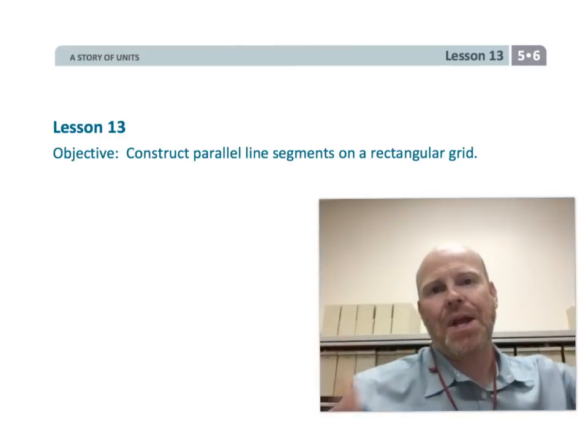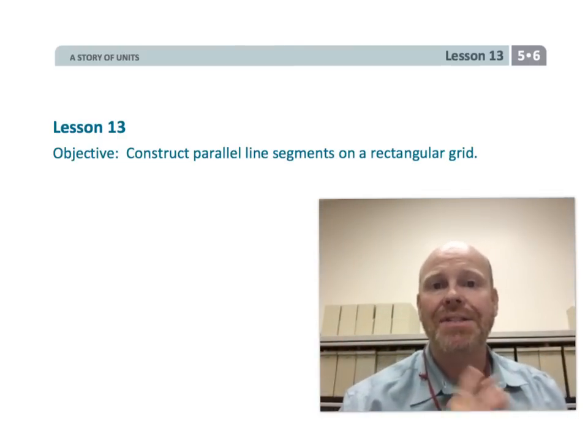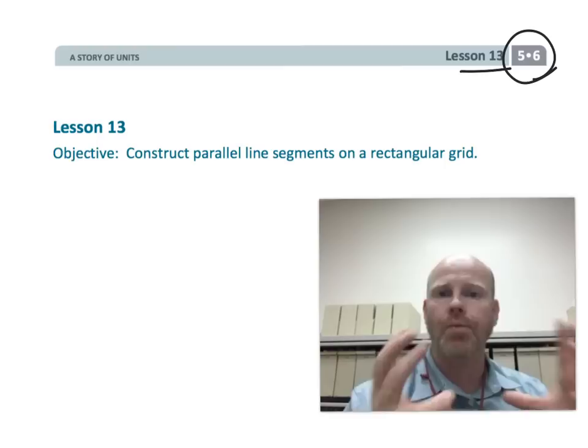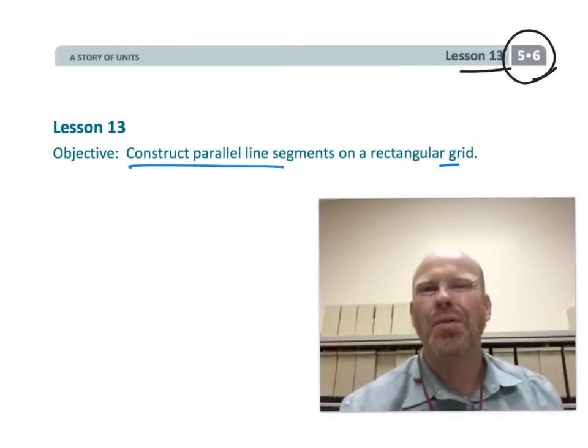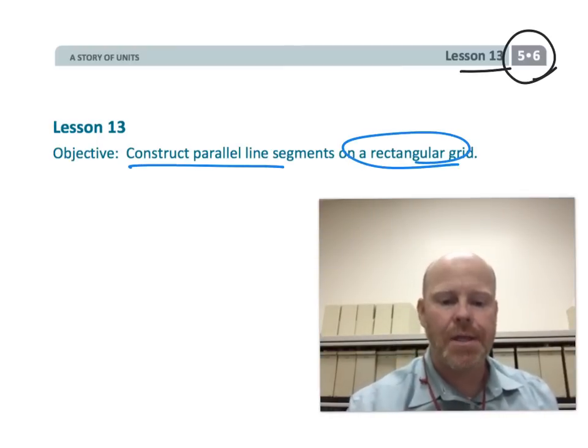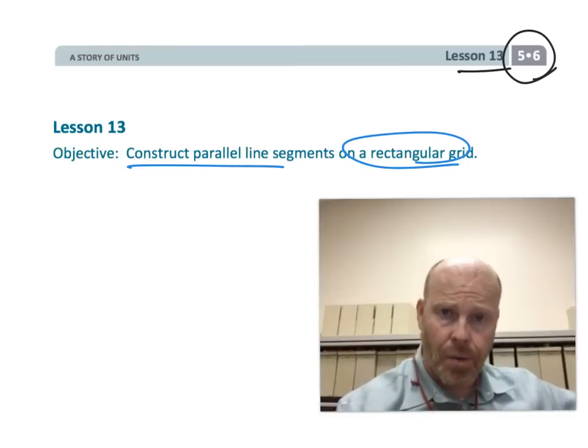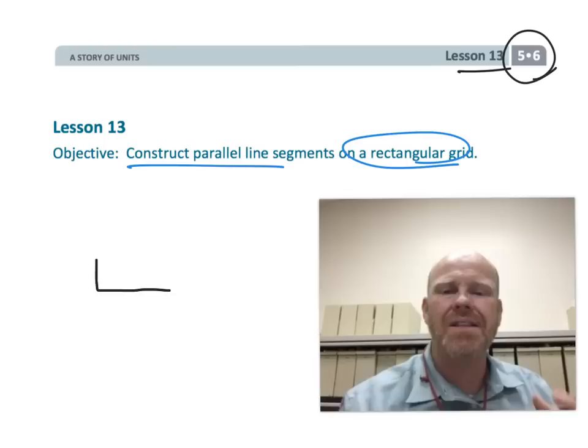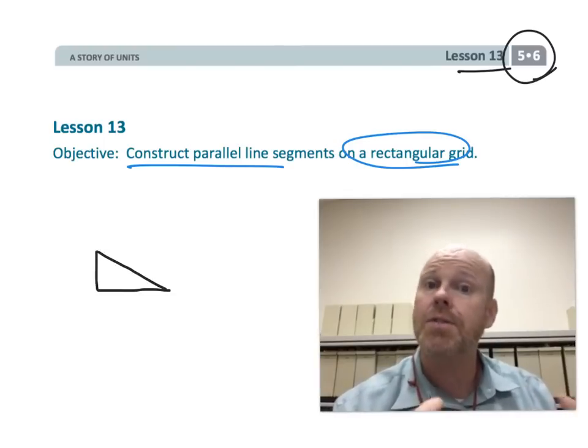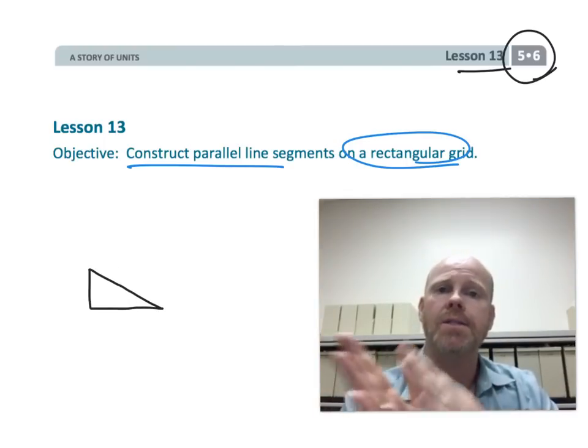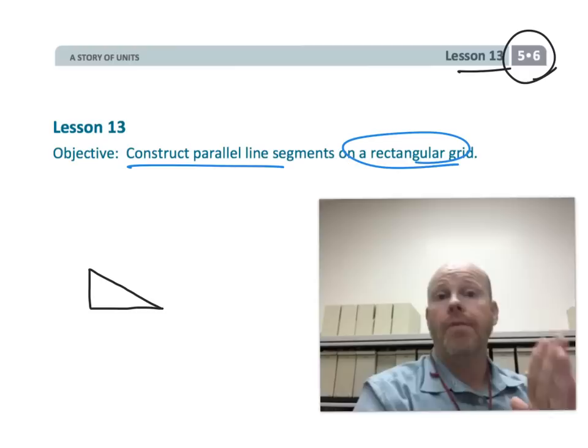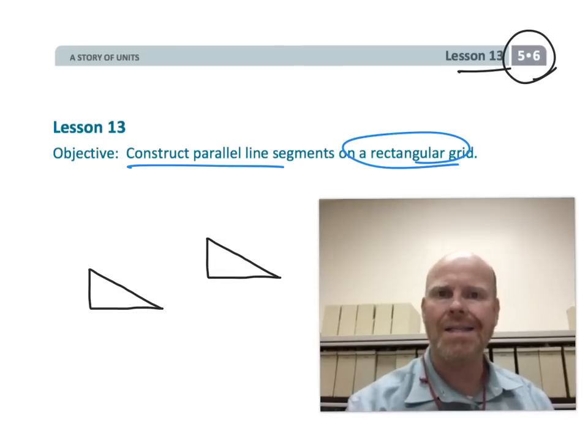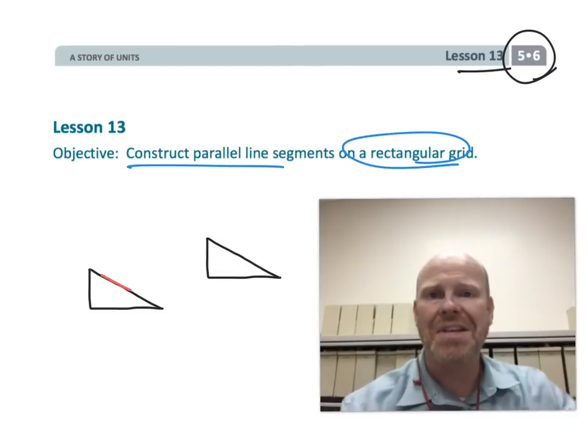This is fifth grade module six lesson 13. In this lesson students are going to be constructing parallel lines on grid paper. The cool thing is students are going to be using what in later grades is called the slope triangle. Students are going to get this informal experience with the slope triangle and using that constant slope to create a variety of parallel lines.